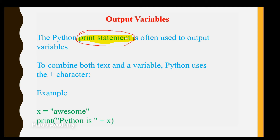For combining text and a variable, Python uses the plus symbol. This plus symbol is used to combine the text and the variable. For example, x equal to 'awesome'. We print 'Python is' plus x — it will print 'Python is awesome'.